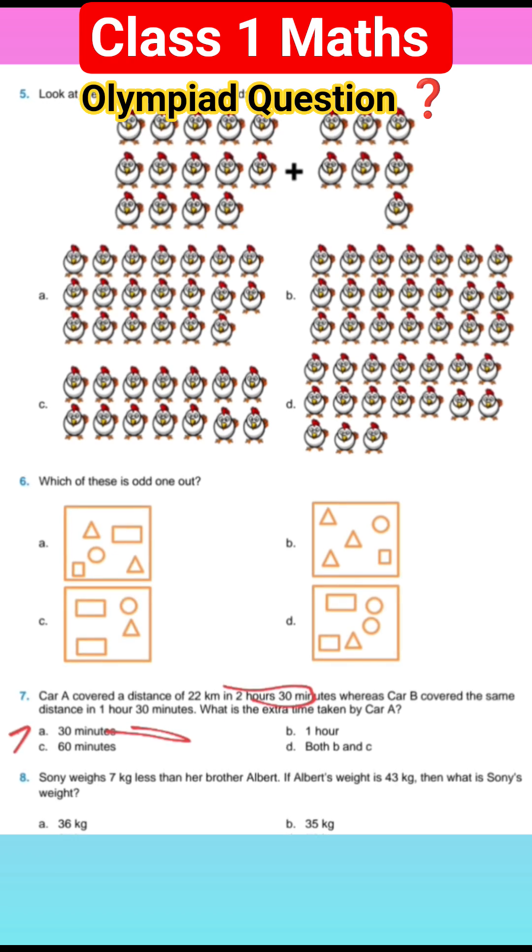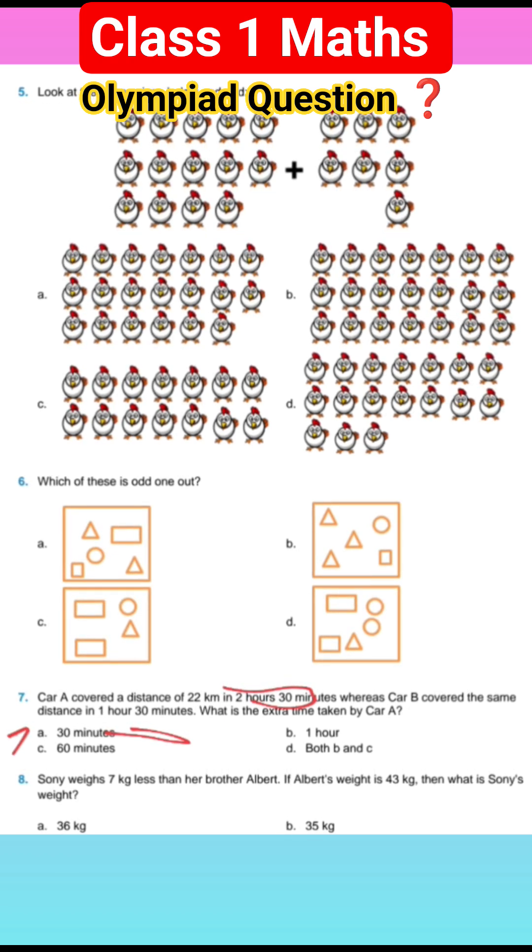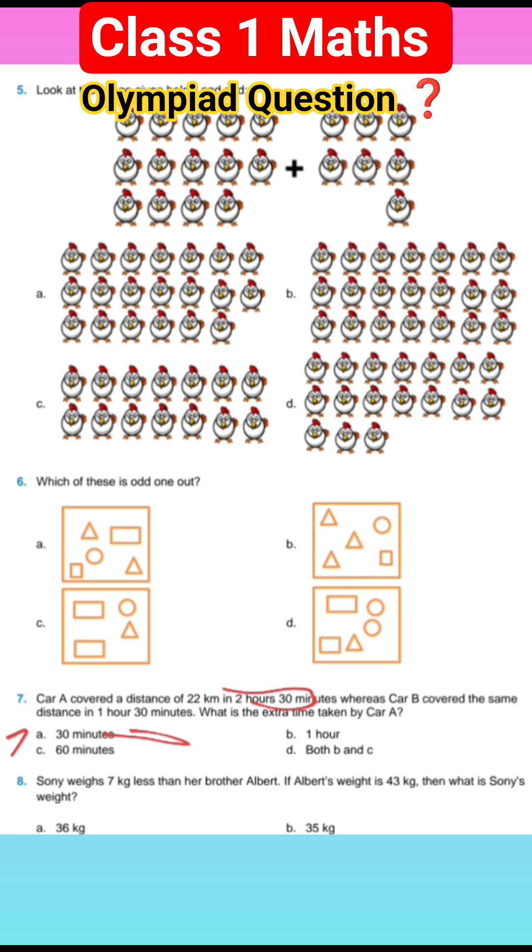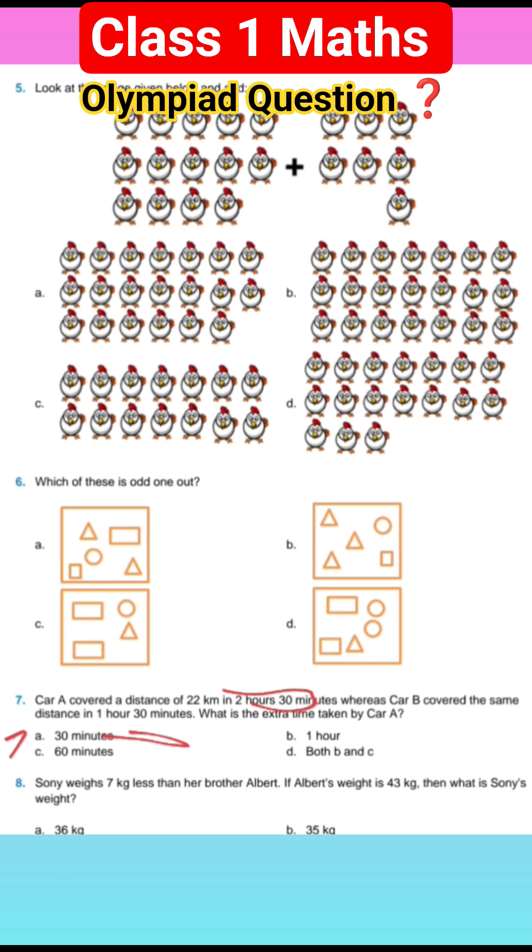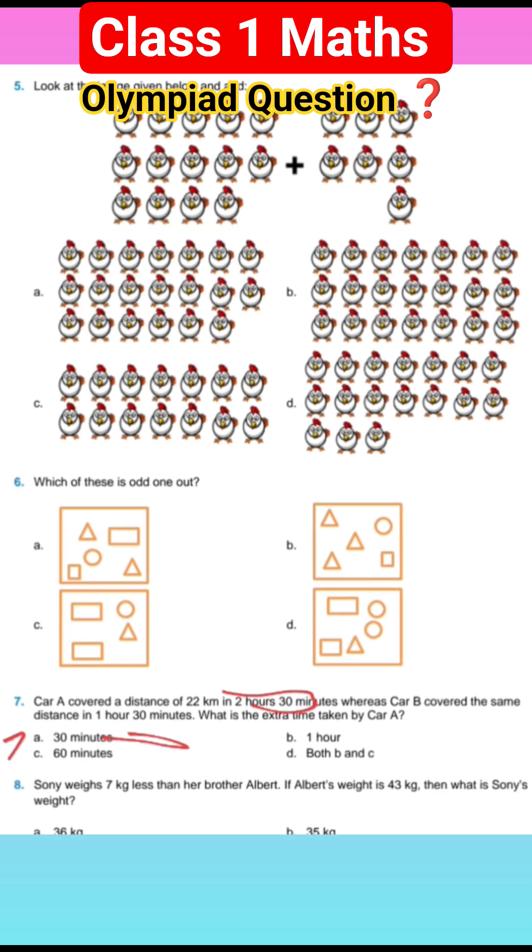Subtract - 2 hours 30 minutes minus 1 hour 30 minutes. You will get 1 hour. So the extra time remaining is 1 hour.